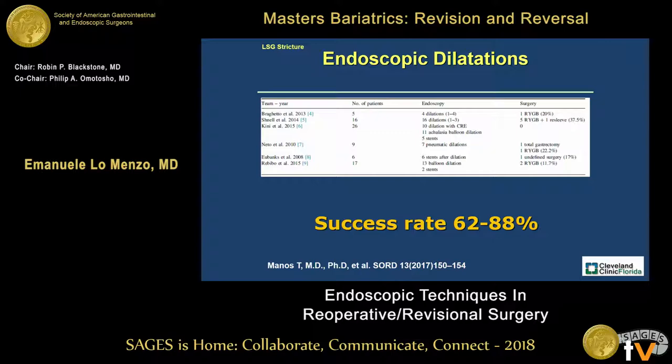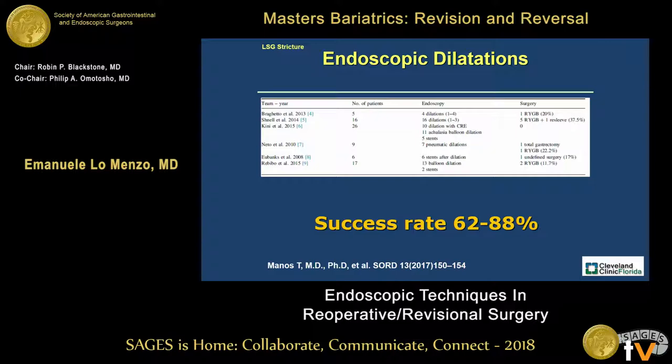In this particular study, they mixed both pneumatic dilatation with regular balloon dilatations — in other words, using the achalasia high-pressure balloons and comparing with the CRE balloons that we would use for stenosis from gastric bypass. Overall success was over 88%. But when it comes to strictures due to a helical rotation along the long axis of the sleeve, the results are much worse, and the positive outcome in this study of expert endoscopists was only 60%.